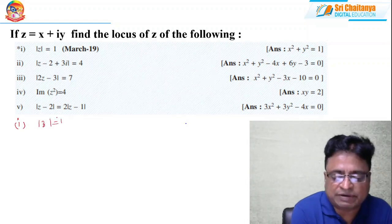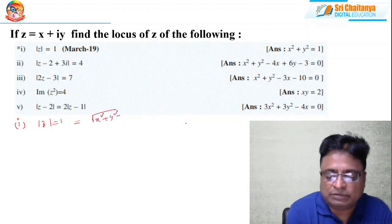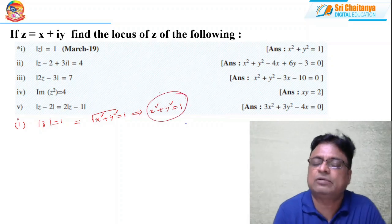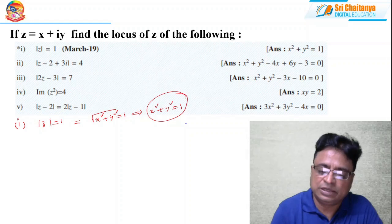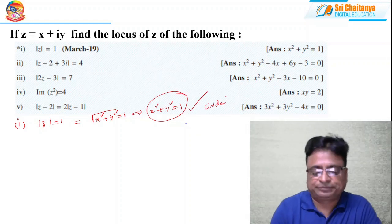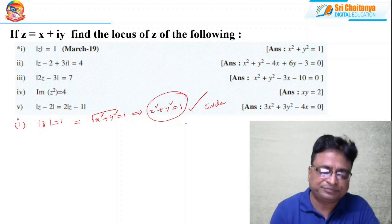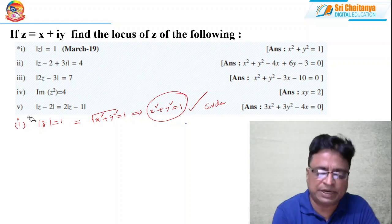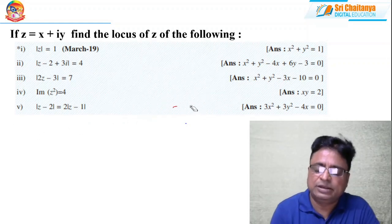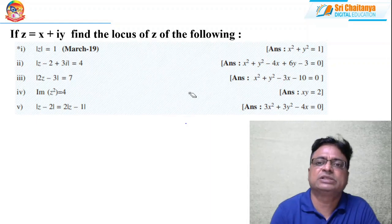First question: mod z = 1 is given. Mod z means √(x² + y²) = 1. By squaring both sides you get x² + y² = 1. Whenever they ask to find the locus, you have to express everything in terms of x and y. So clearly it indicates the locus is a circle. In complex number problems, locus problems deserve much more attention because in complete examinations, problems based on locus are repeatedly asked.